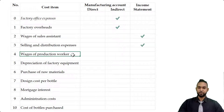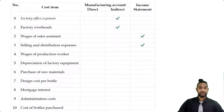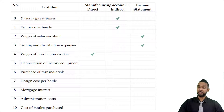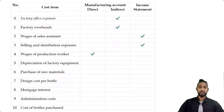Next, we have wages of production worker. Wages of a production worker is manufacturing because it says production, and more specifically it is direct. Depreciation of factory equipment — once it says factory, it's manufacturing, and because it is not a direct cost, it is indirect.